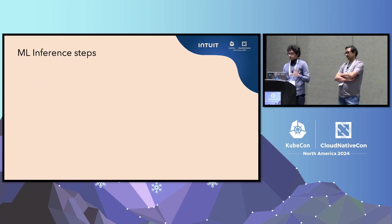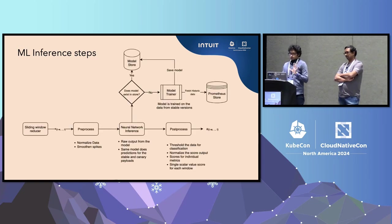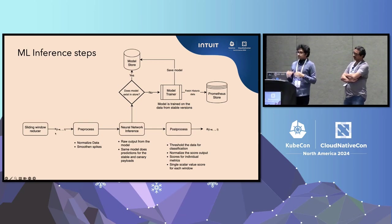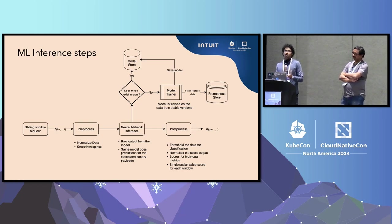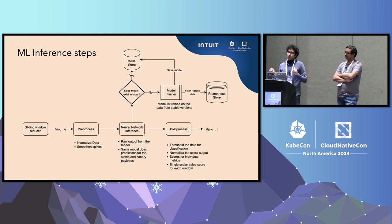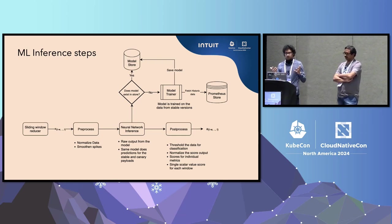Now we'll go deeper into the ML inference steps. We have the sliding window reducer producing windowed data. The first thing we do is preprocess the data. The model usually requires normalized data between a certain range — typically zero to one, or minus one to one. The second thing is that there are many spikes in the data, so we may need to smooth some of them to get the real underlying structure. That smoothing is optional but sometimes useful.